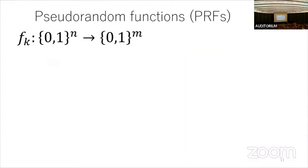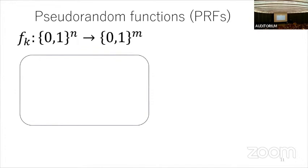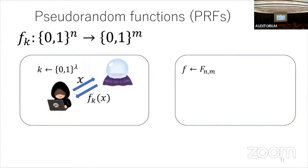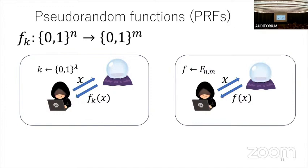Next I explain pseudorandom functions: an efficiently computable function with key K. Security is defined by indistinguishability of two experiments. In one experiment, key K is chosen uniformly at random, and the adversary can query an oracle that evaluates f_K(x). In the other, a truly random function f is chosen, and the adversary queries that oracle. Security means they are computationally indistinguishable — the adversary cannot tell whether it is querying the pseudorandom function or a truly random function oracle.